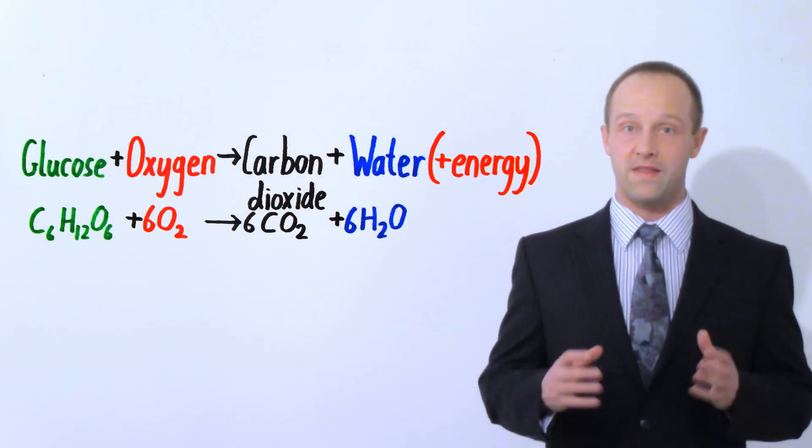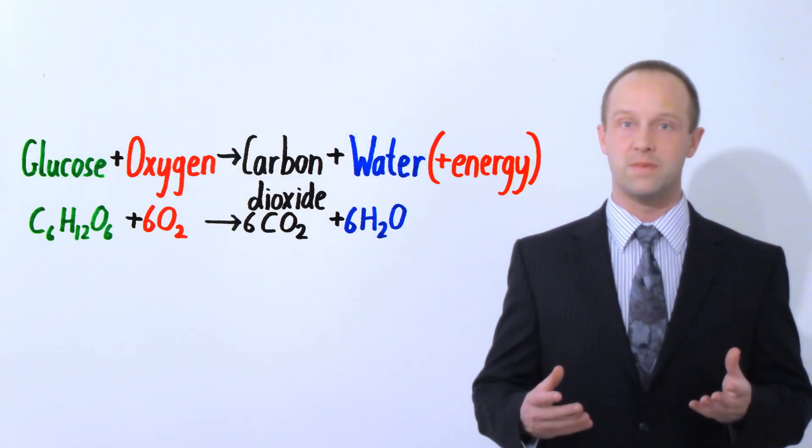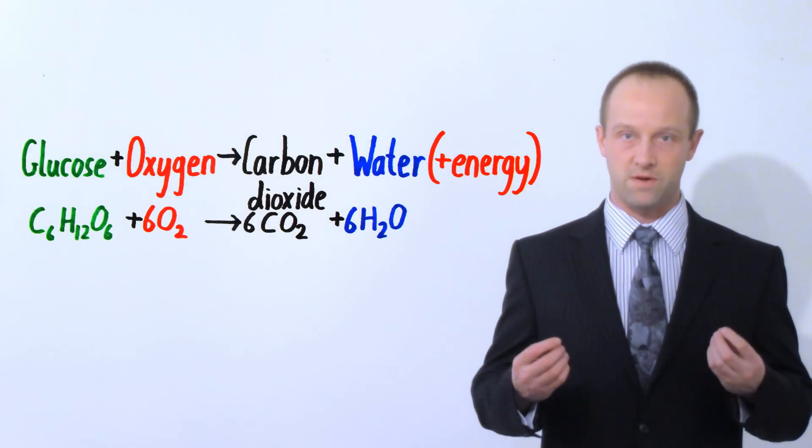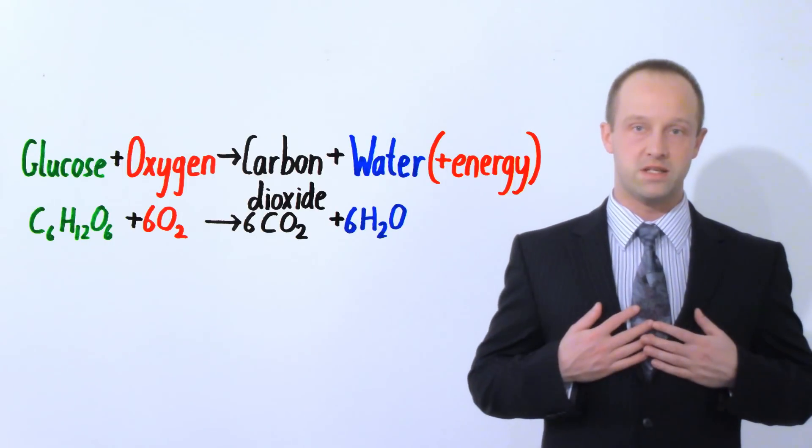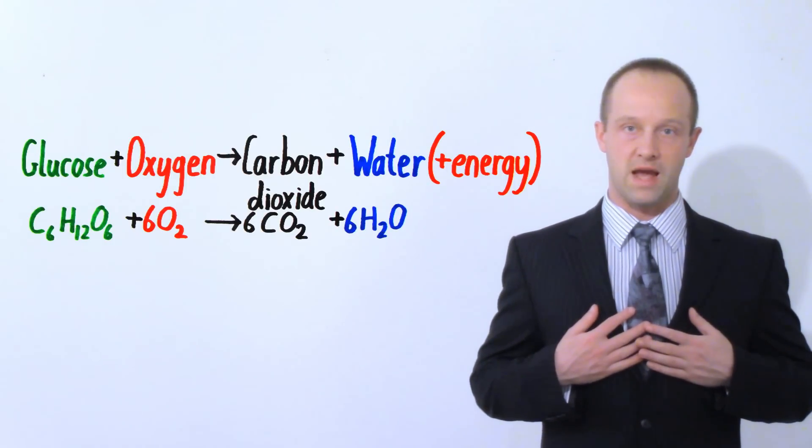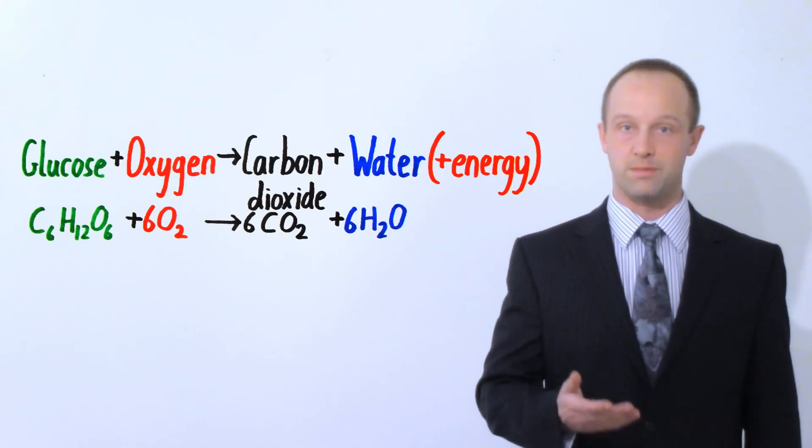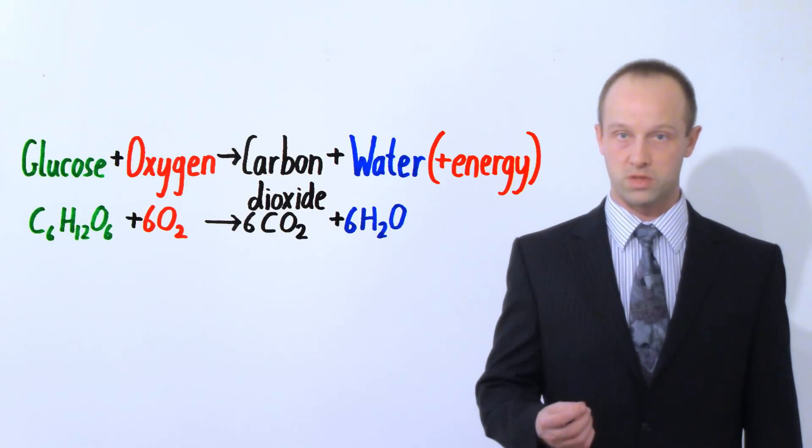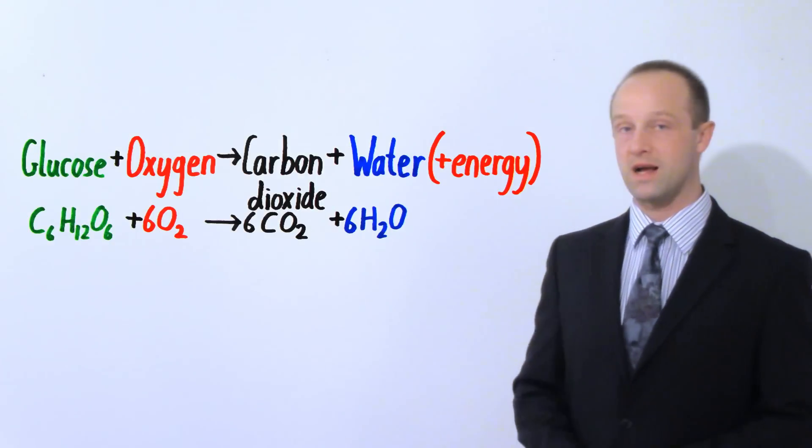So that sugar and that oxygen, the sugar is coming from the diet and the oxygen is coming from the surroundings. In our species of course we gain our oxygen from the air but if it's something like for example a fish it will be gaining dissolved oxygen from the water but it's still the same reaction.